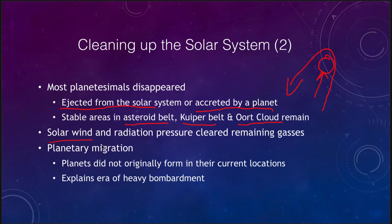The solar wind and the radiation pressure of the Sun also cleared out the remaining gases. Gases could not be accreted by some of these planets because they were not massive enough, so the solar wind would push those away and clear out the solar system that way.